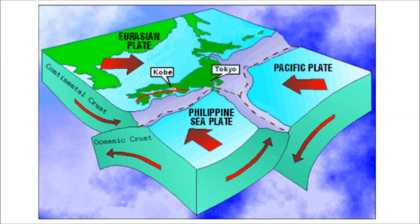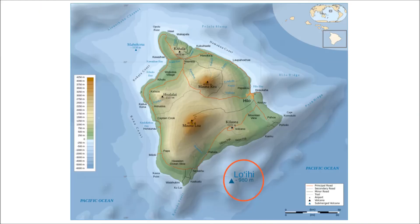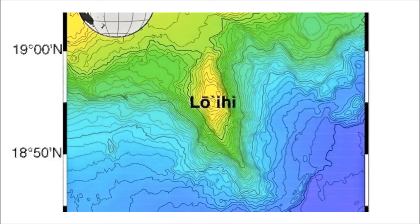At the same time, new islands are always forming. At the current southeast end of the chain, Loihi, now a seamount, will one day become the newest Hawaiian island.